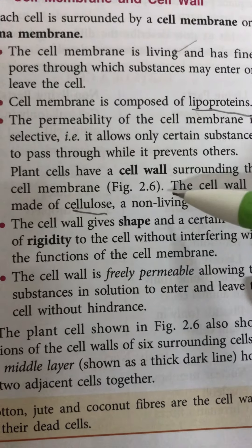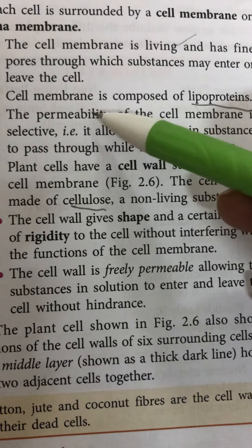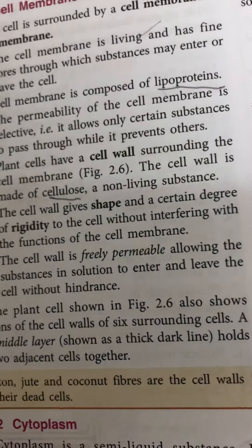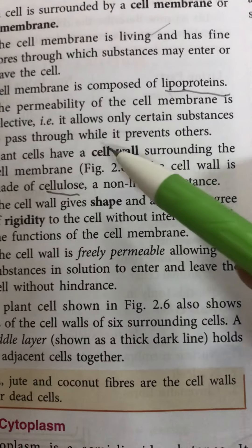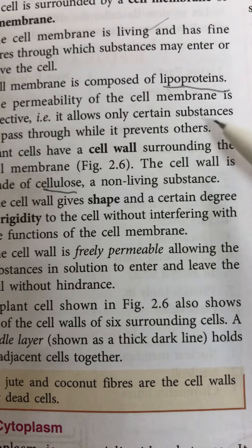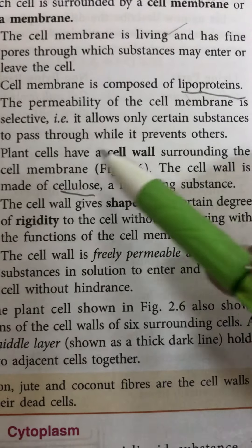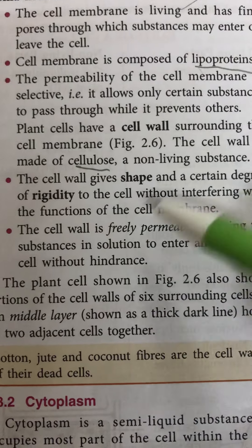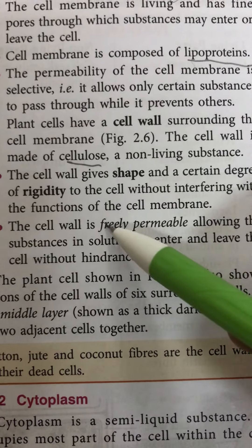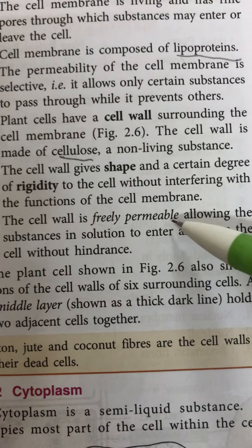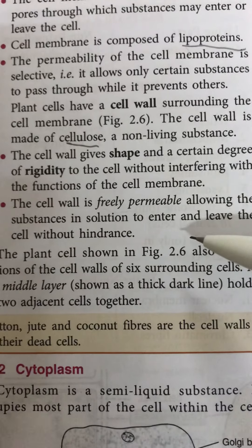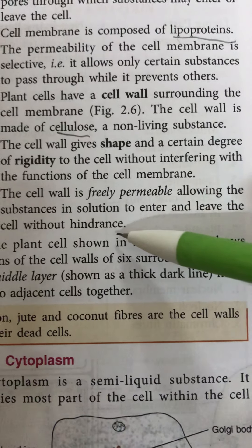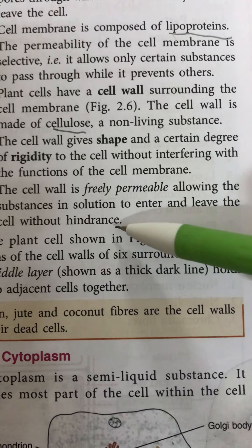Along with this, their permeability varies. Cell membrane is selectively permeable or semi-permeable in nature, which means it allows only certain substances to pass through while it prevents others. A cell wall, however, is freely permeable, which means it allows all substances to enter and leave the cell without any obstruction or hindrance.